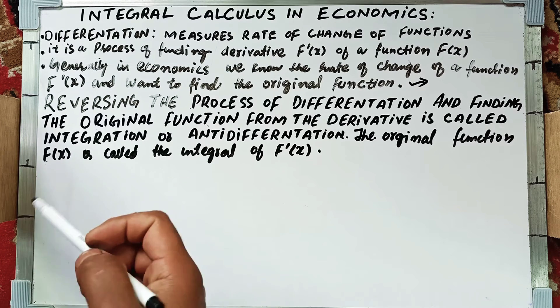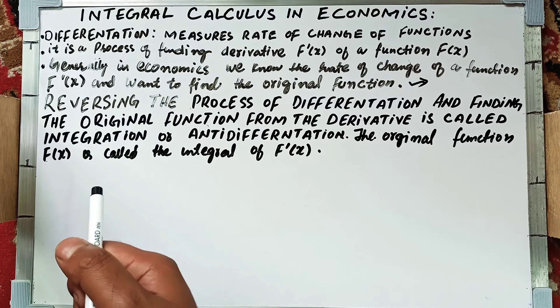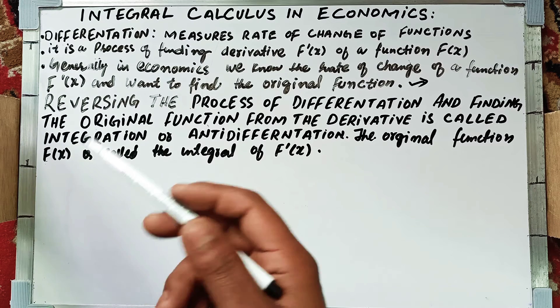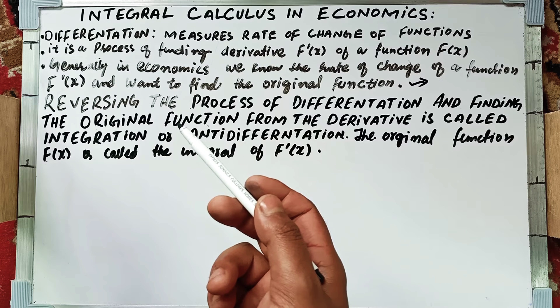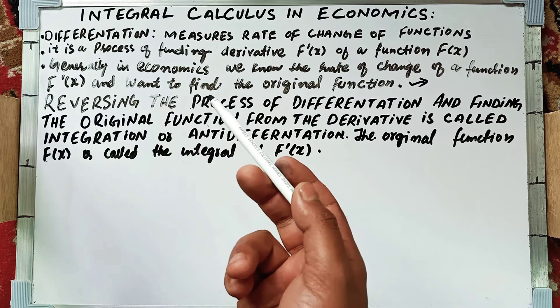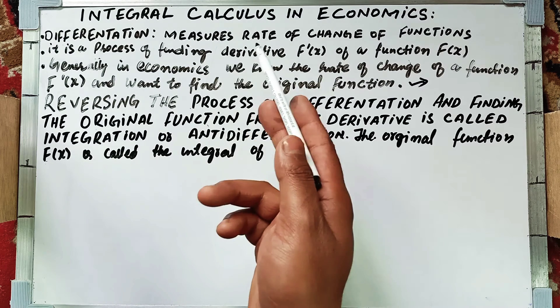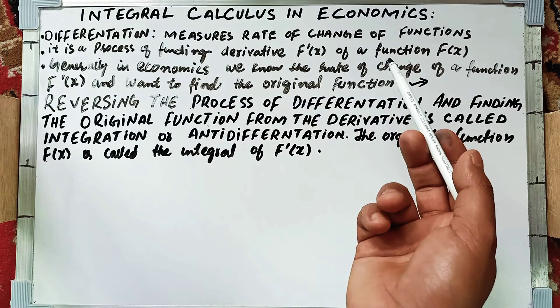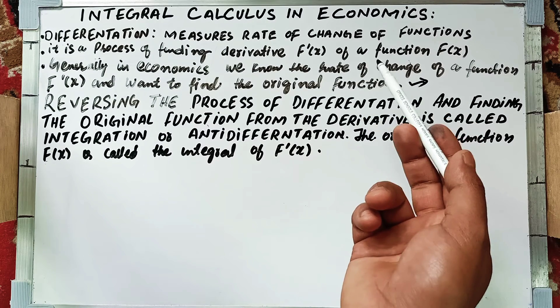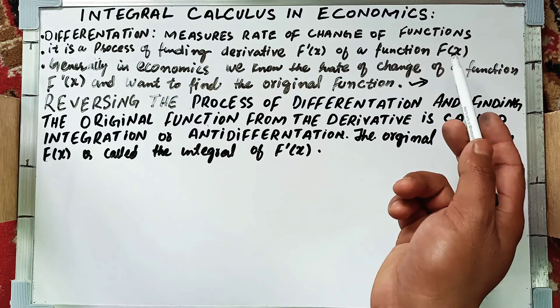Before this chapter, we have already completed the differentiation chapter and the applications of differentiation in economics. Differentiation, as we know, measures rate of change of functions. Differentiation was all about rate of change of functions.